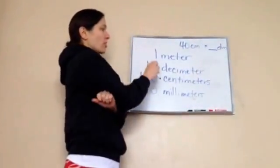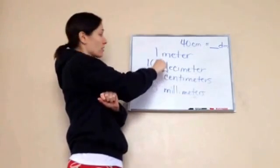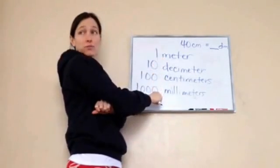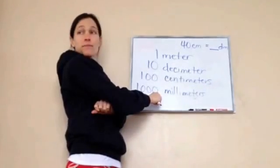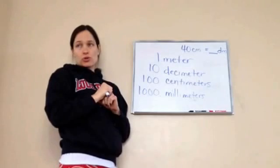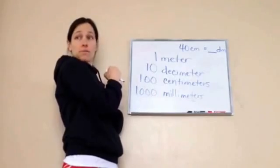Now, what I want you to see is that 1 meter is 10 decimeters, 1 meter is 100 centimeters, and 1 meter is 1,000 millimeters. Remember when we talked about that? Now, what do you see is happening with my zeros? Each time it's just adding another one.